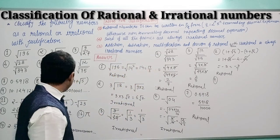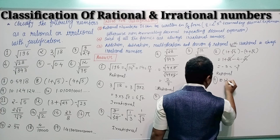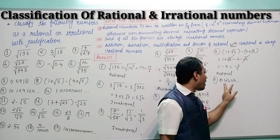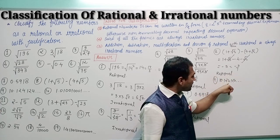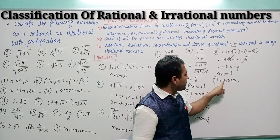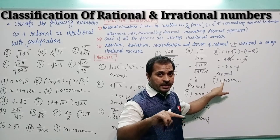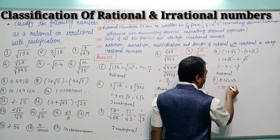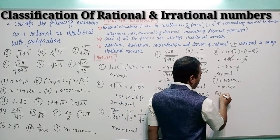Question number 9: 10.124124124... You can see that after every 3 digits the same sequence 124 occurs again and again. This means it is non-terminating recurring decimal expansion, written as 10.1̄2̄4̄ (10.124 bar). Non-terminating recurring decimal expansion is always rational, so this is rational.